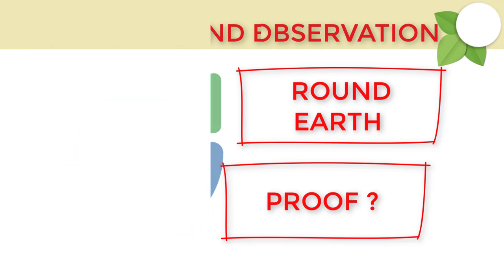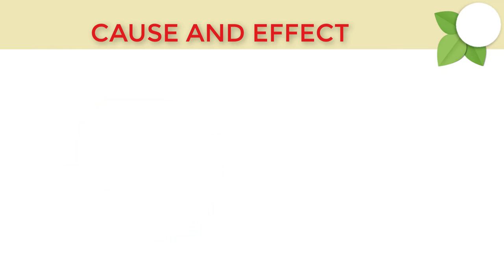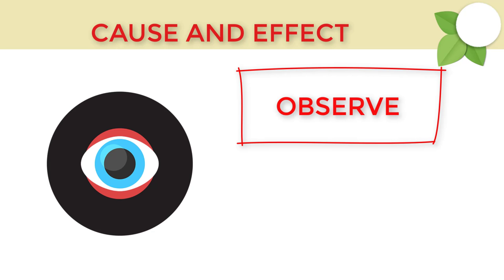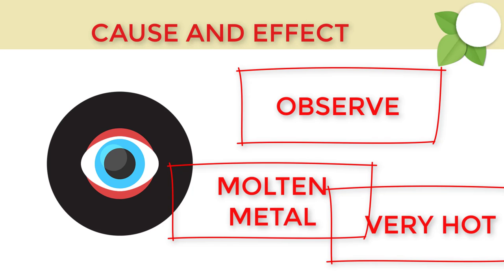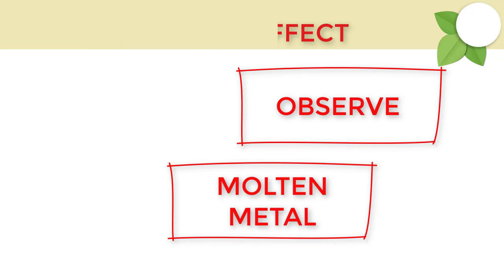Also, we sometimes do cause and effect in science. Suppose we observe something and then say, since this has happened, then this must have happened. Like suppose we see a molten metal in some part, then I would say that that part is very hot or some disaster has happened there. That's why that part of wire has melted.